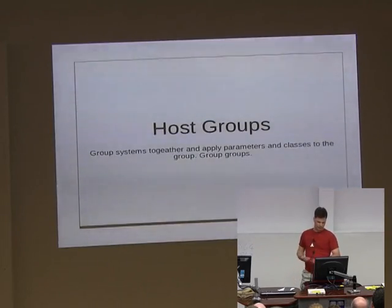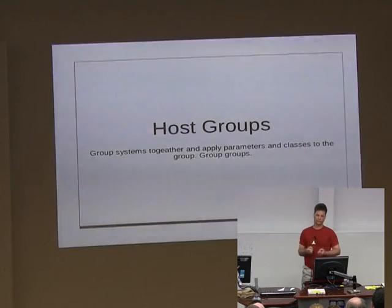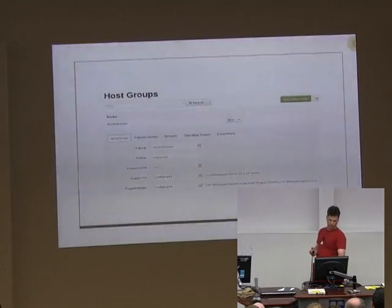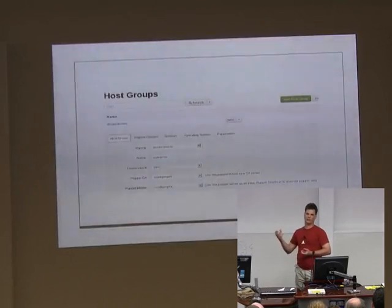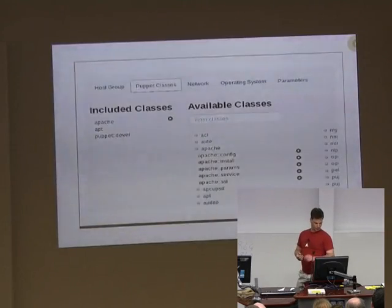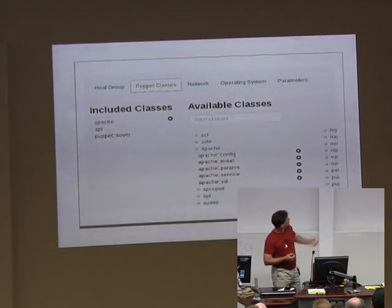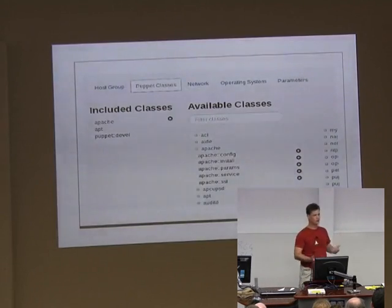When you're attaching a system in Foreman, you might be dealing with an individual system or a group of systems - it can group them together. When grouping systems, you're defining a set of roles; for example, you might define a web server role and attach a bunch of classes and parameters to that role. As you can see, there's a list of classes in this sample. Groups can also apply to other groups and be nested.